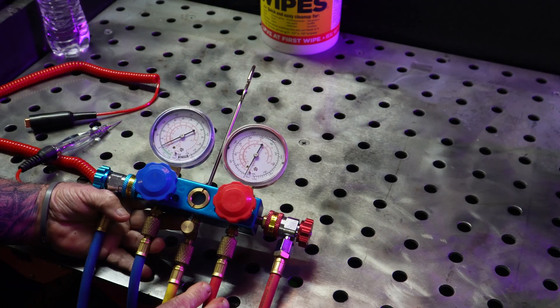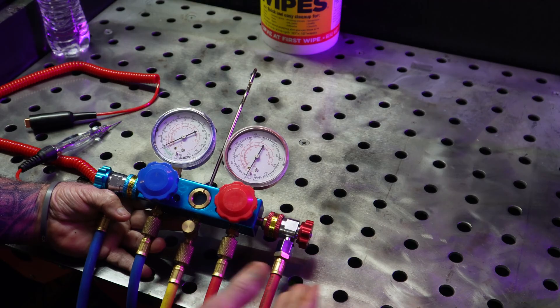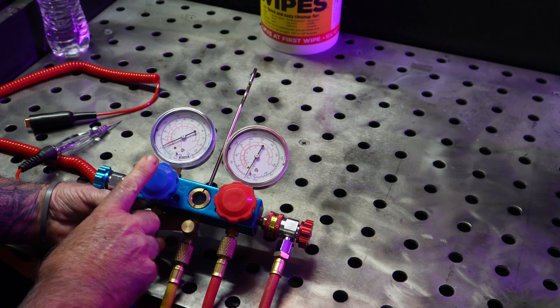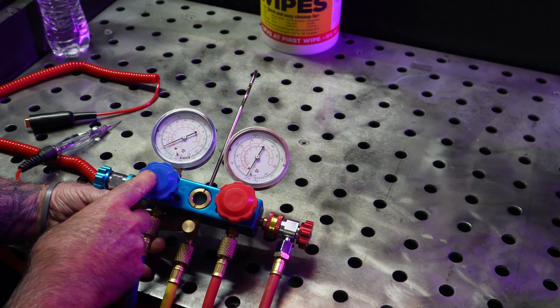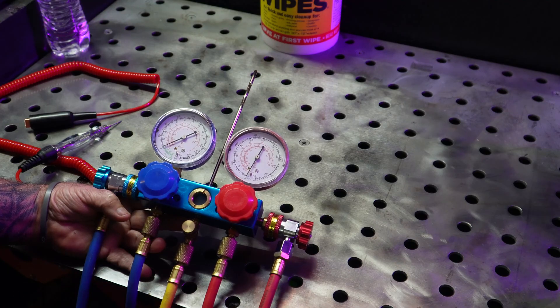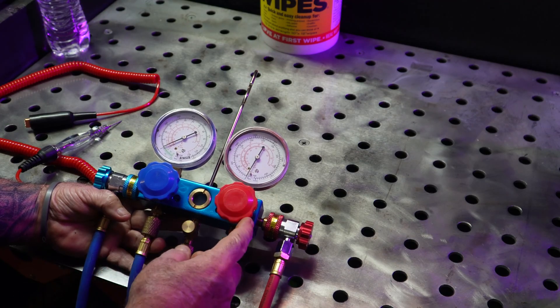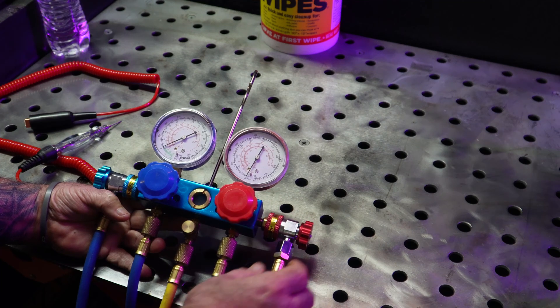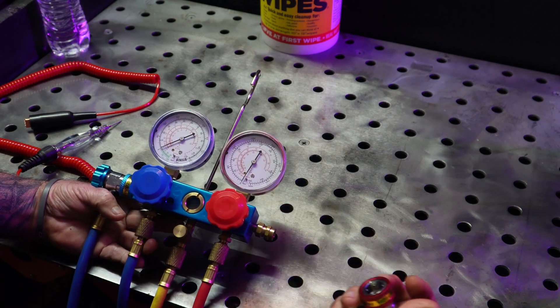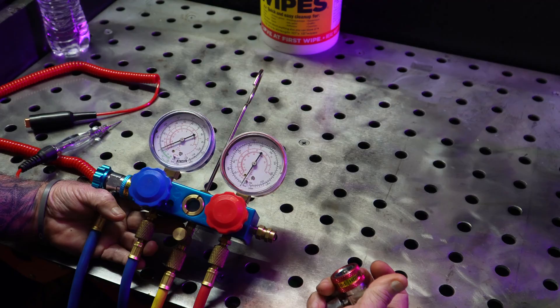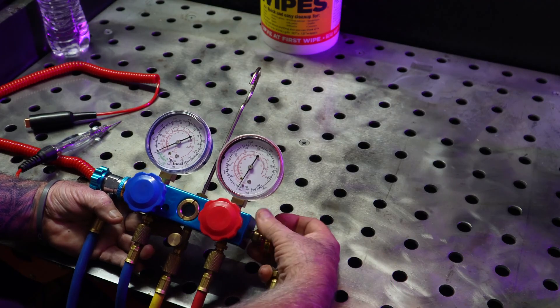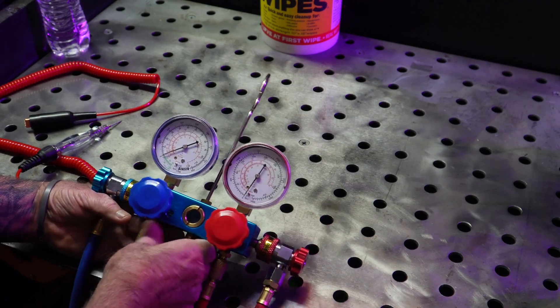First let's go over the gauges themselves. They're pretty much all the same. The blue always indicates the suction side or the low side. Red is your high side or your high pressure. These are for R134a.